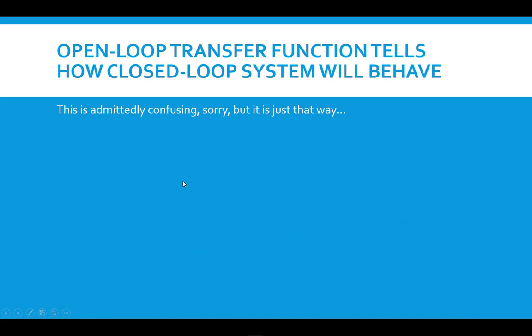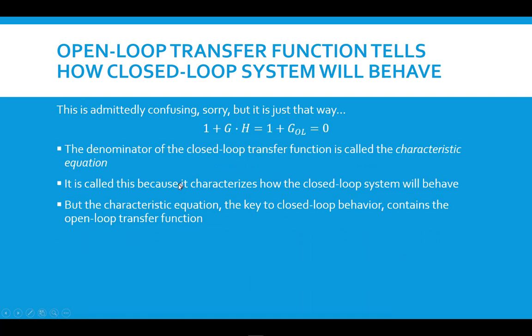So this is confusing — I admit that. But it's just that way; I didn't invent it. The denominator of the closed loop transfer function set equal to zero is called the characteristic equation, and it's called this because it characterizes how the closed loop system will behave. But the characteristic equation, which is the key to understanding closed loop behavior, actually contains the open loop transfer function as a component in that equation.